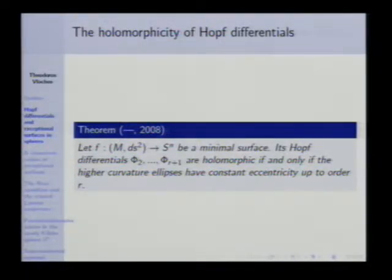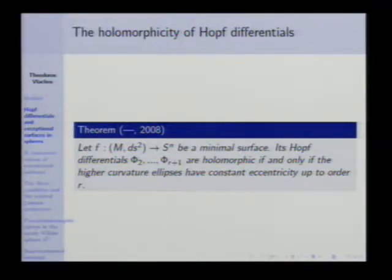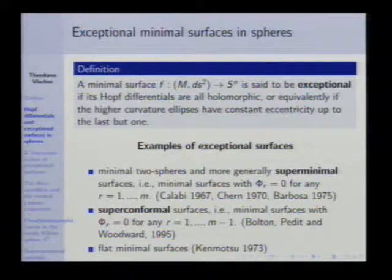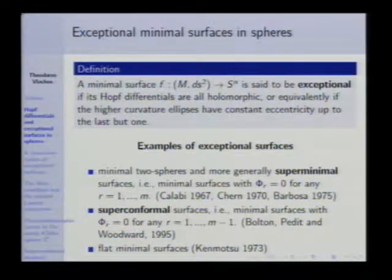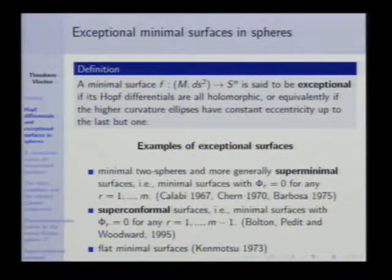The holomorphicity of the Hopf differentials depends on the eccentricity of those ellipses. If we have a minimal surface, then the Hopf differentials phi_2 up to phi_{r+1} are holomorphic if and only if the higher curvature ellipses have constant eccentricity up to order r. So we have a characterization of holomorphicity — they are not always holomorphic. That is the definition of exceptional minimal surfaces: they are the surfaces for which all Hopf differentials are holomorphic.